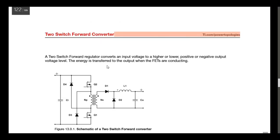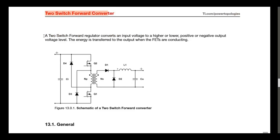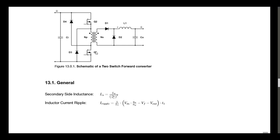If you look at the basic circuit diagram of the two switch forward converter, it converts an input voltage to a higher or lower positive or negative output voltage level. The energy is transferred to the output when the FETs are conducting. This is a very good application note you can find on the Texas Instruments website at ti.com/powertopology. Here we have two MOSFETs — Q2 and Q1 — and two freewheeling diodes D3 and D4. The primary winding of the transformer is connected between the source of Q2 and drain of Q1. On the secondary side, we have rectifier diode D1, freewheeling diode D2, and the output low-pass filter L1 and C0.